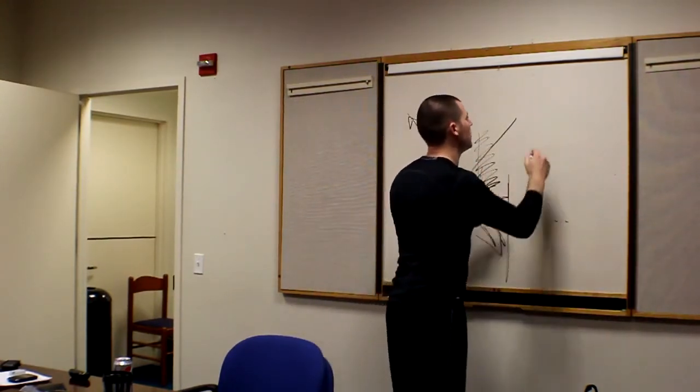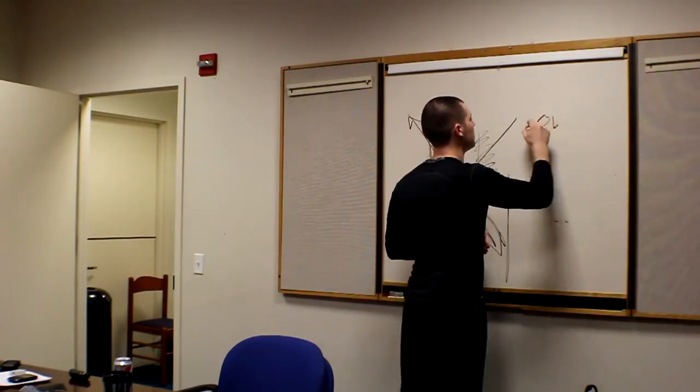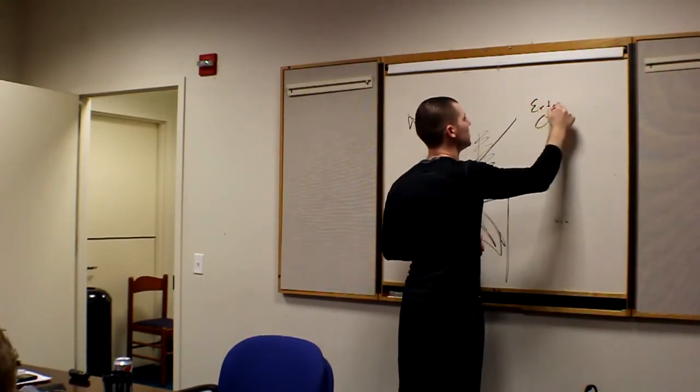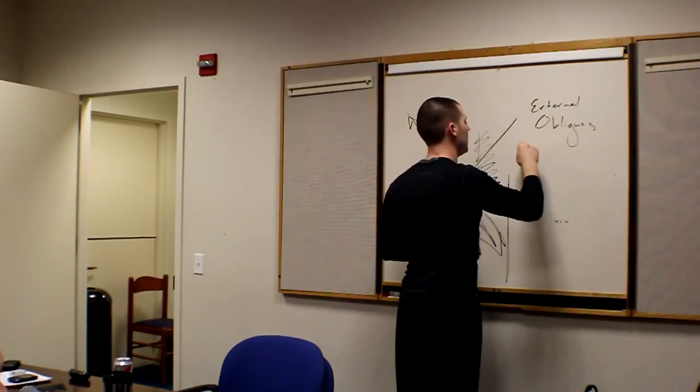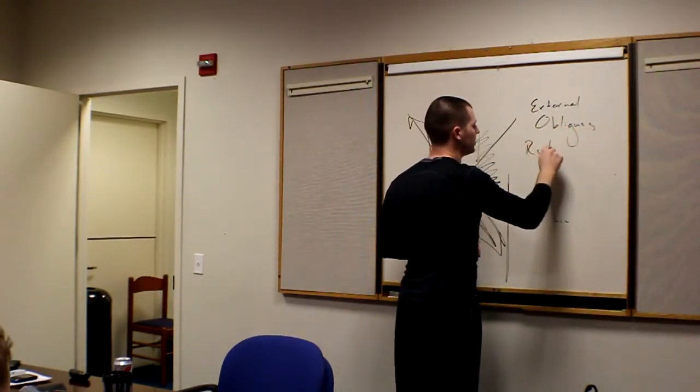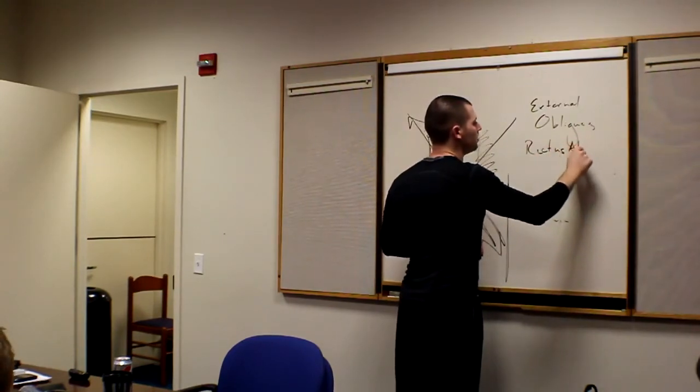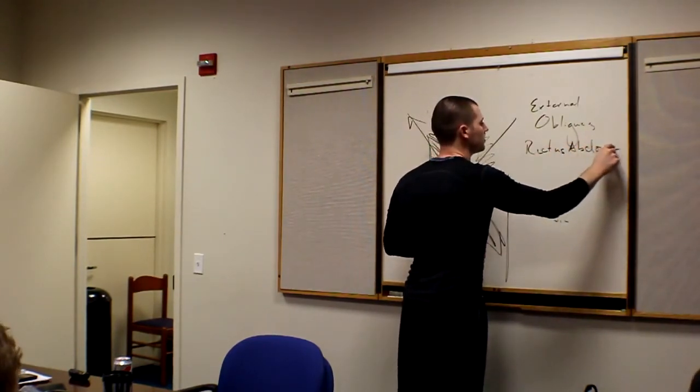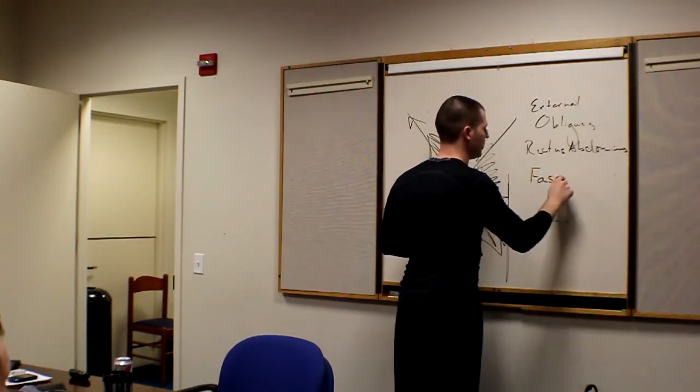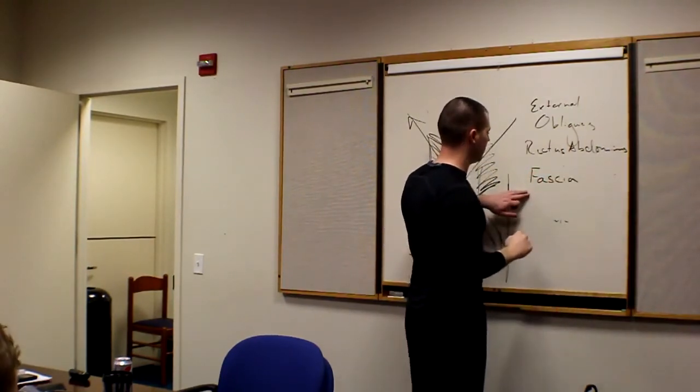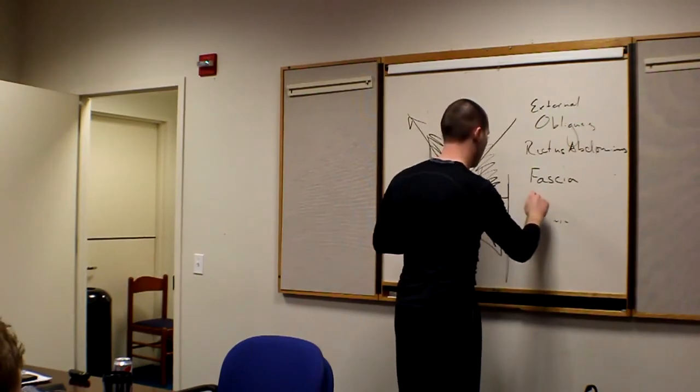Now, if you ask me, the anterior oblique subsystem would also include the rectus abdominis and be connected a lot by this abdominal fascia. So you end up with obliques, specifically external obliques, rectus abdominis, fascia, abdominal fascia, linea alba, and then adductors.